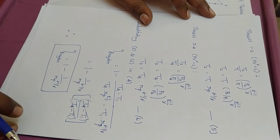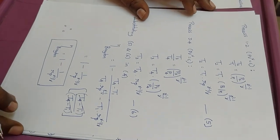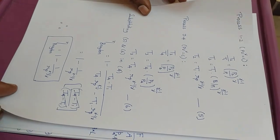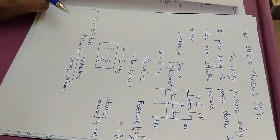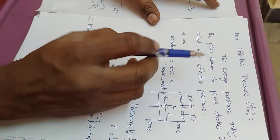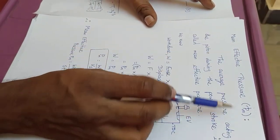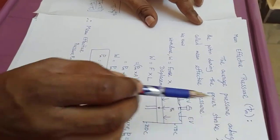In Otto, diesel, dual, and Brayton cycles, we also find the mean effective pressure. Let us see what mean effective pressure is.